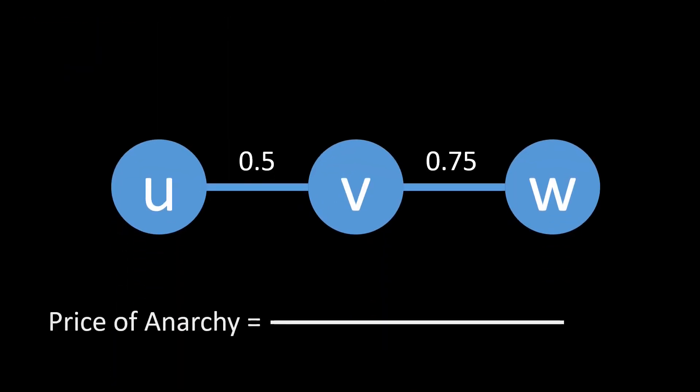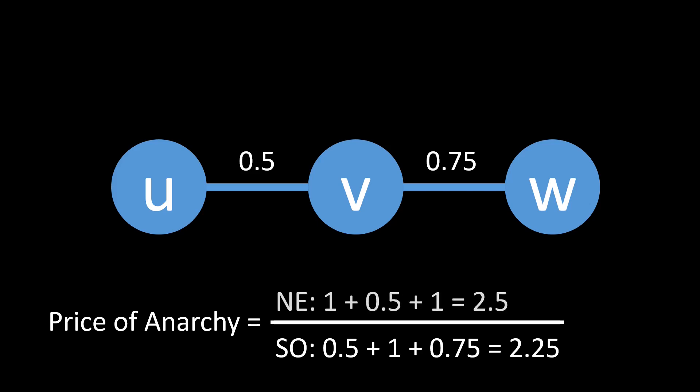We can easily compute the price of anarchy for our example network. We have already seen that the social optimum is achieved if node V caches the movie. Node V will incur a cost of 1, and the other two nodes incur a cost of their distance to V — in the sum this is a cost of 2.25. We have also seen that it is also a Nash equilibrium if the two outer nodes cache the movie: caching costs 1 plus 1 for the two outer nodes, and 0.5 for node V, so the total is 2.5. The ratio of the two values is 1.11, which is the price of anarchy for this three-node network.